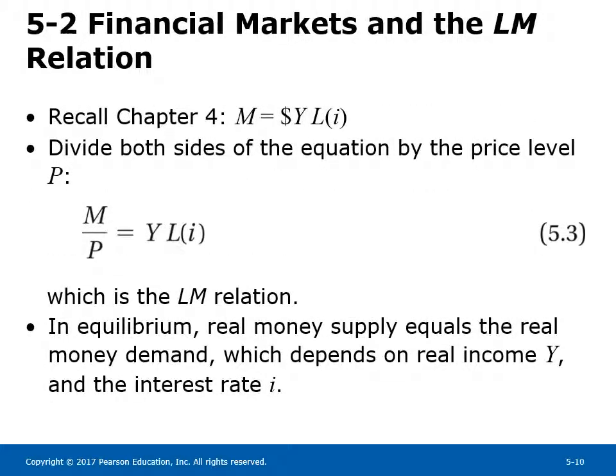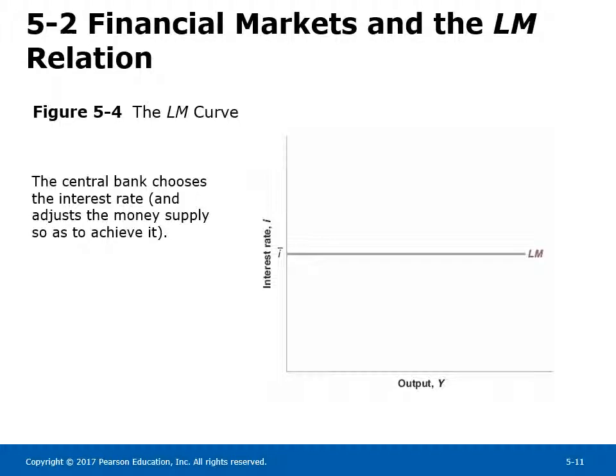Section 5-2: Financial markets and the LM relation. Recall from Chapter 4 that the equilibrium condition in financial markets is given by money supply M equals nominal income $Y times a function of the interest rate. Dividing both sides by the price level P gives Equation 5.3: real money supply M over P equals real income Y times a function of the interest rate I. This equation — real money supply equals real money demand — is the LM relation. Figure 5-4 shows the LM curve: the central bank chooses the interest rate and adjusts the money supply to achieve it, so LM is horizontal at the interest rate chosen by the central bank.